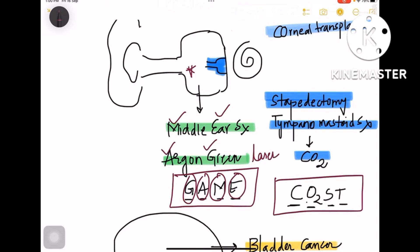That is stapedectomy and tympanomastoid surgeries. So stapedectomy is also in the middle ear, but for stapedectomy a different laser is used—carbon dioxide—whereas for all other middle ear surgeries you use Argon Green laser. So 'costly game' is the mnemonic here. Now we have done with urology, ENT, stones, and dermat.